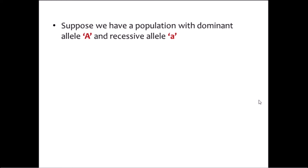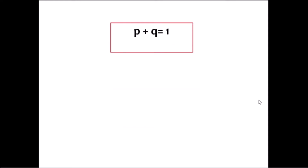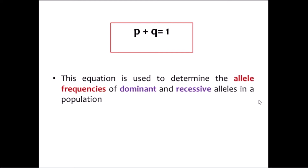In order to explain the equations of Hardy-Weinberg equilibrium, suppose we have a population with dominant allele A and recessive allele a. The frequency of dominant allele is represented as p, and the frequency of recessive allele as q. According to Hardy-Weinberg principle, p plus q is equal to 1. This is the first equation of Hardy-Weinberg equilibrium, used to determine the allele frequencies of dominant and recessive alleles in a population.